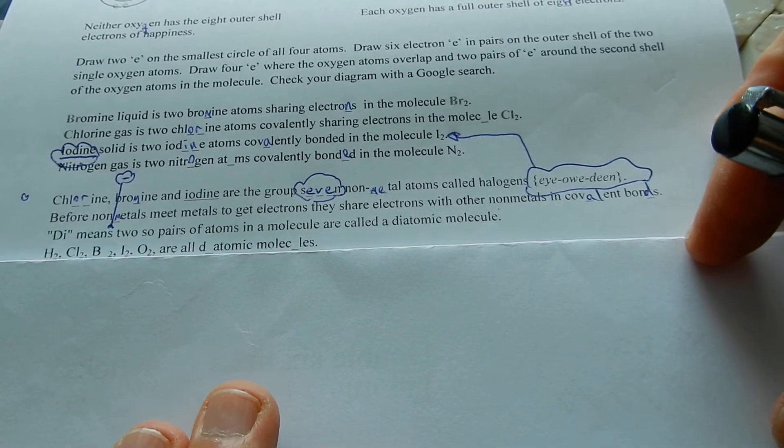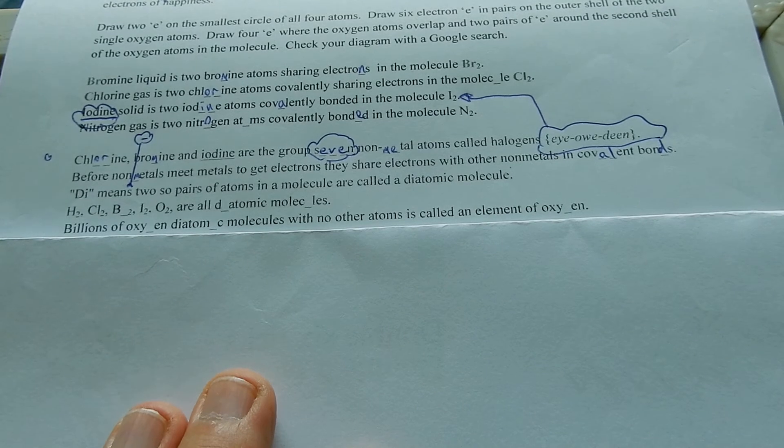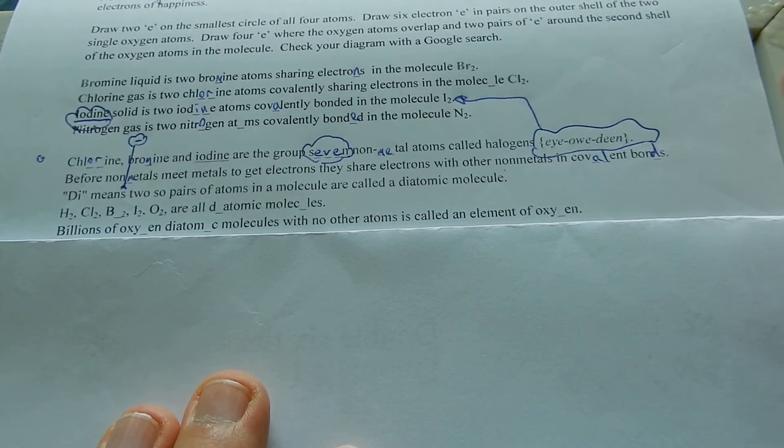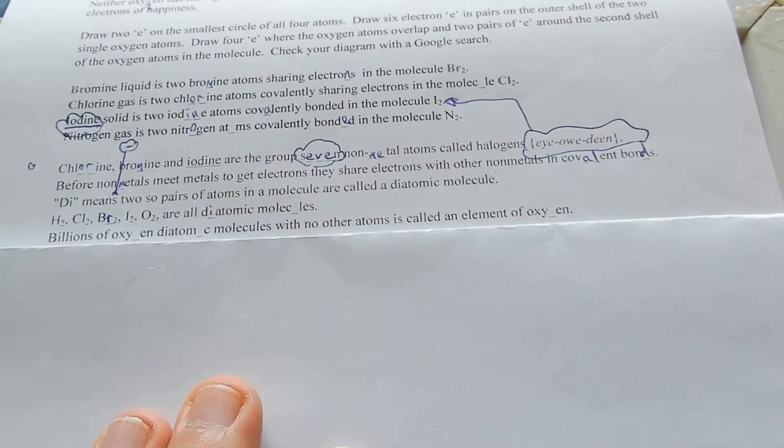Di means two. So pairs of atoms in a molecule are called a diatomic molecule. H2, Cl2, Br2, I2, O2 are all diatomic molecules.